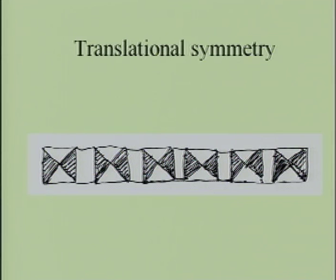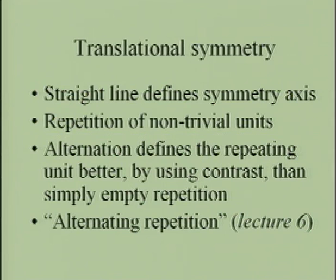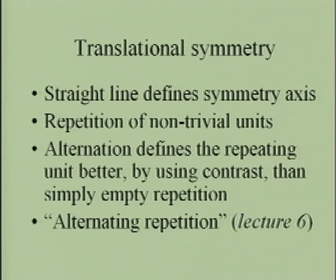Here is translational symmetry: we have a unit that we shift in a horizontal direction and make many copies of it. The line of symmetry defines the symmetry axis. Translational symmetry is obtained by the repetition of non-trivial units. Alternation defines the repeating unit better by using contrast than simply empty repetition. This leads to one of the properties observed by Christopher Alexander — alternating repetition, connecting back to lecture six.